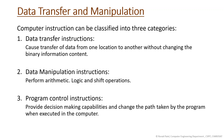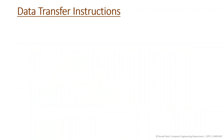Program control instruction provides decision-making capabilities and changes the path taken by the program when executed. Examples: data transfer instructions include load and store; data manipulation instructions include add, subtract, shift right or left; and program control instructions include jump on zero, jump if not equal to zero, and jump if carry.